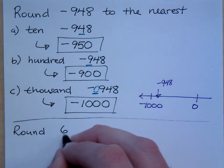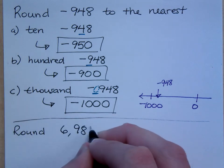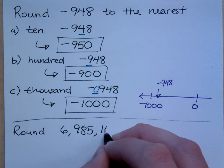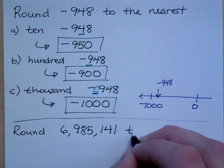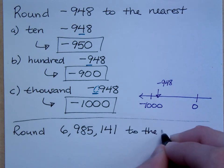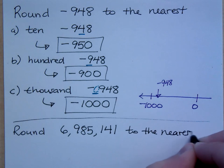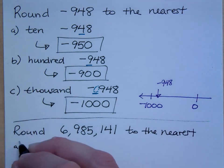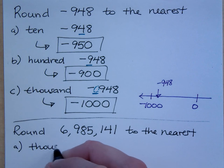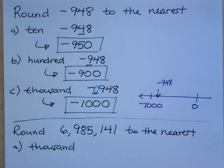Let's round 6,985,141 to the nearest, let's say to the nearest 1,000. So, where's my 1,000 spot? The 5 is my 1,000. So if I round to the nearest 1,000, what do I have?